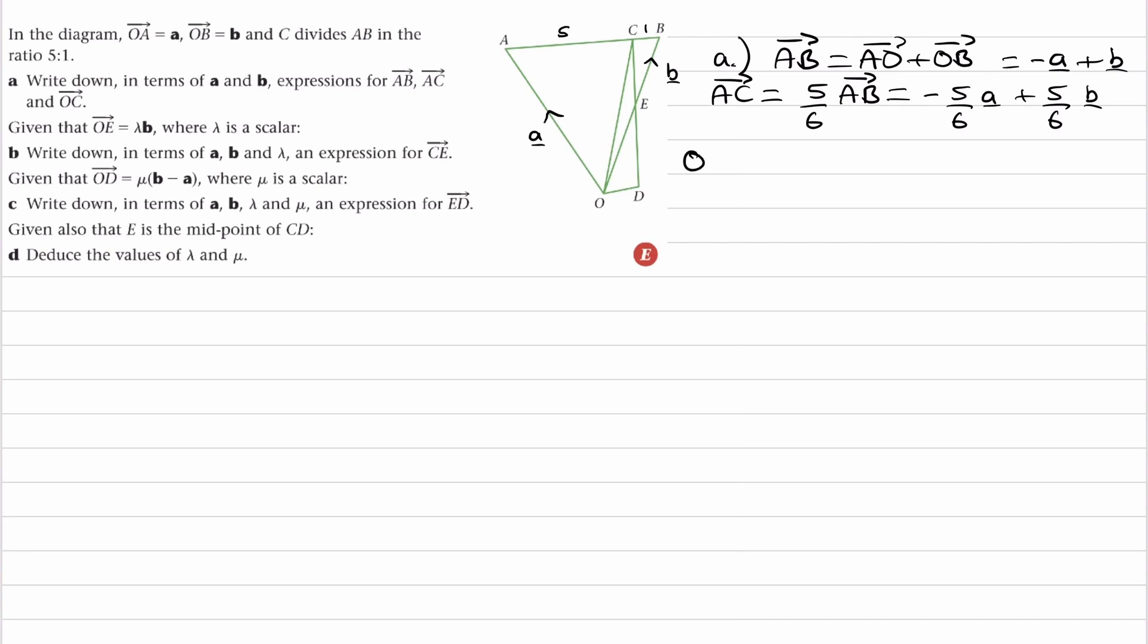And then finally, for OC, so to go from O to C, we can go from O to A and then A to C. So that will be a plus AC, which is minus 5 over 6a plus 5 over 6b. So OC is then a sixth of a plus 5 over 6 of b.